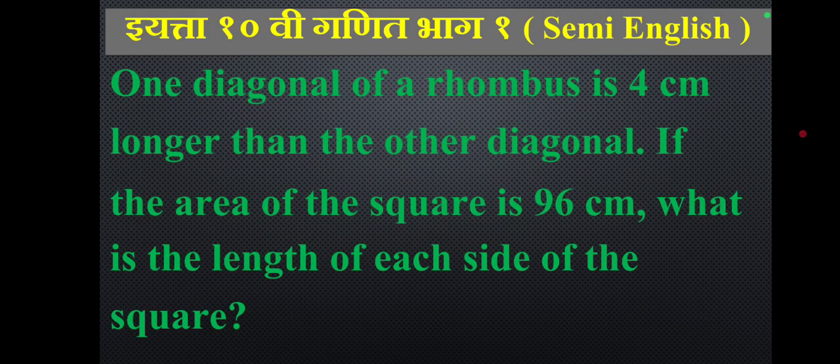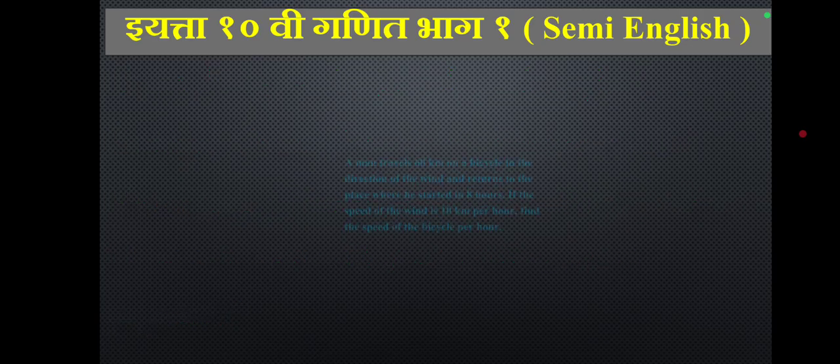One diagonal of a rhombus is 4 cm longer than the other diagonal. If the area of the rhombus is 96 cm², what is the length of each diagonal?